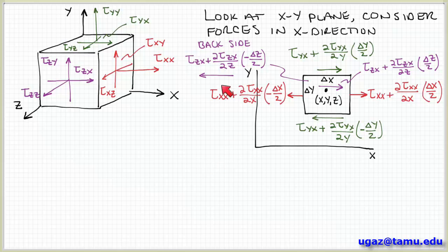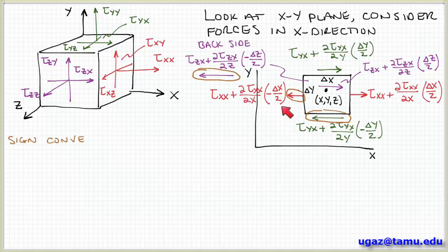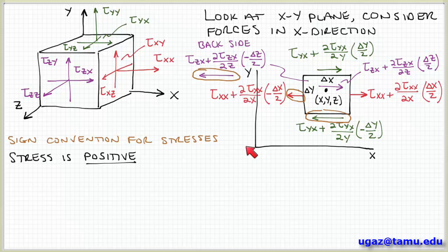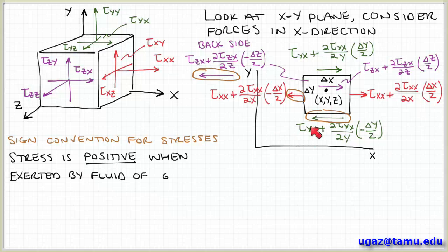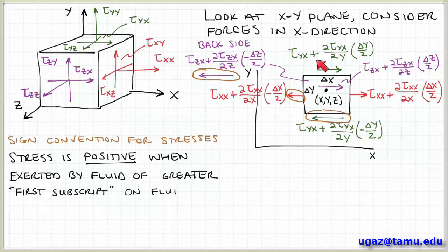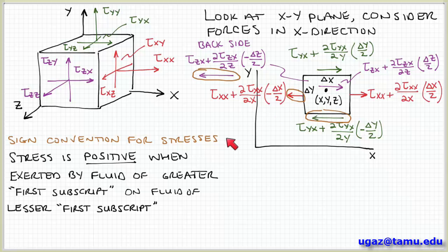Notice that I took some liberties in assigning directions to these arrows — some are pointing left to right and some are pointing right to left. These arrows pointing in the negative direction reflect a sign convention that we have when we talk about stresses. That sign convention is such that a stress is considered positive when it's exerted by a fluid of greater first subscript in the stress tensor notation. We need to have some convention to define what's positive and negative, and this is what's generally accepted.